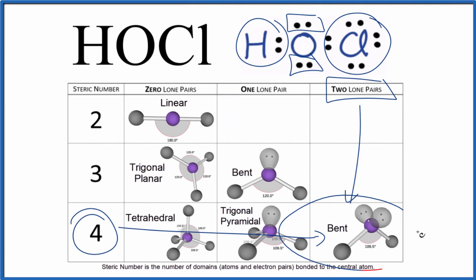So we set our bent molecular geometry, bond angle about 109.5. We could also use the AXE notation to figure out the molecular geometry for HOCl.